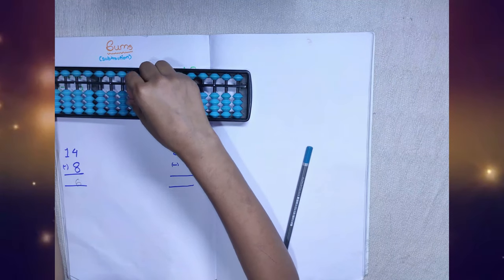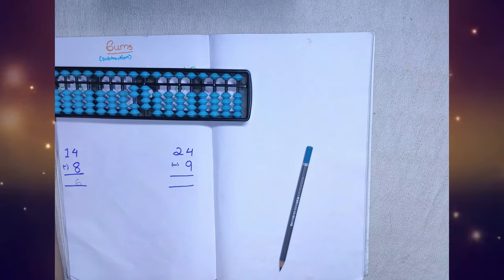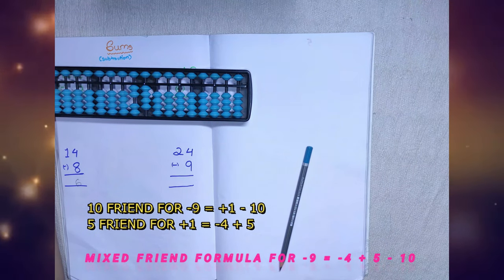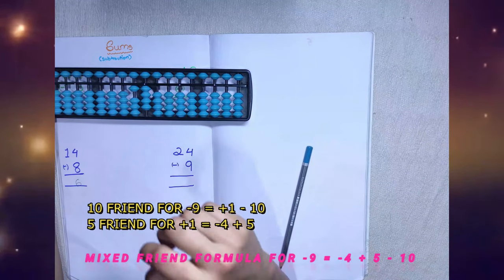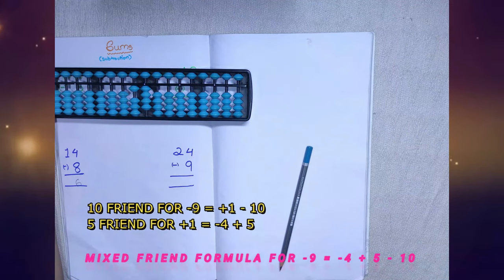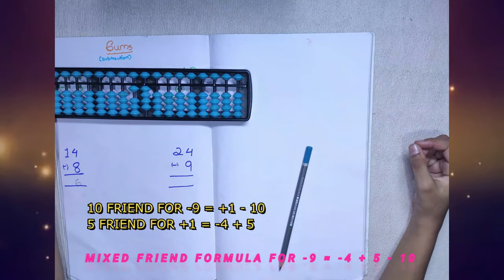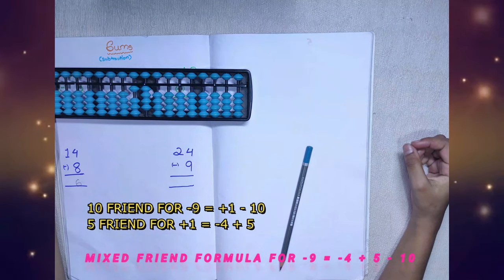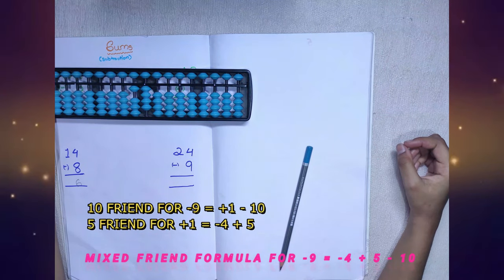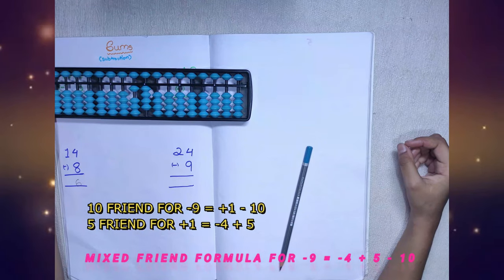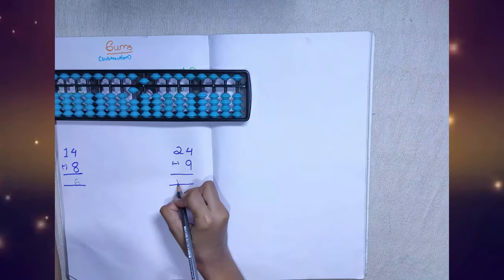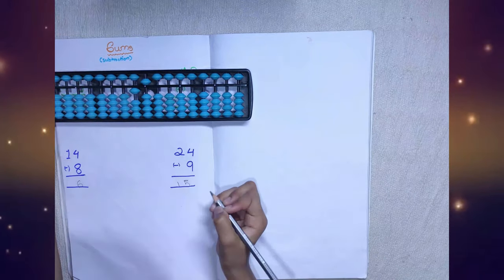4th sum: 24 minus 9. 10 friends: minus 9 is equal to plus 1 minus 10. We don't have plus 1, so we will use 5 friends. 5 friends: plus 1 is equal to minus 4 plus 5. The answer is 15.